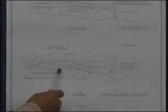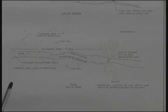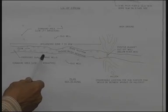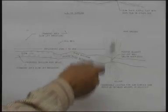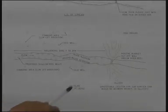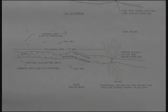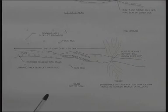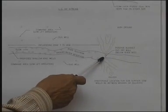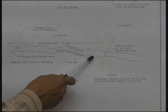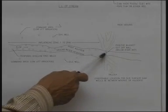Supposing this is the stream course, that is the main stream in the watershed, and there are high grounds on either side. At one particular point, we can select that location for construction of a subsurface dam. For bringing down the costs, we can select a place where the width of the stream would be less.